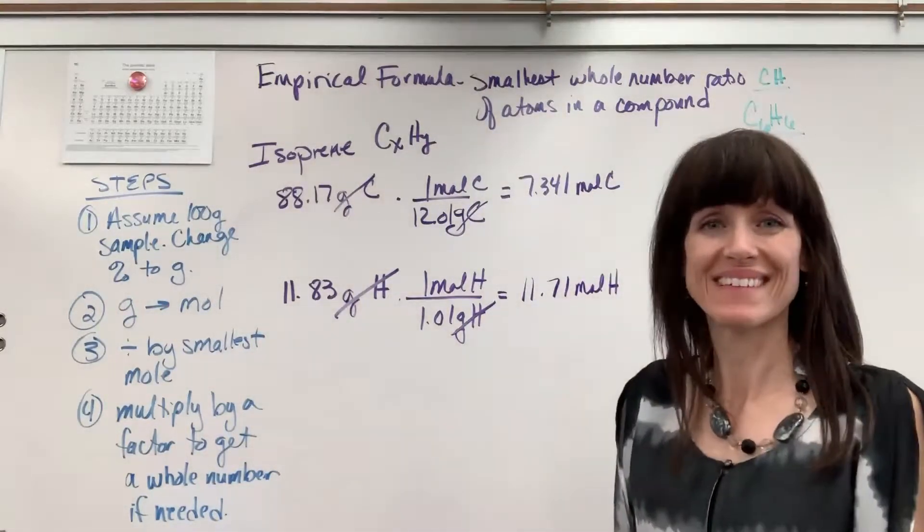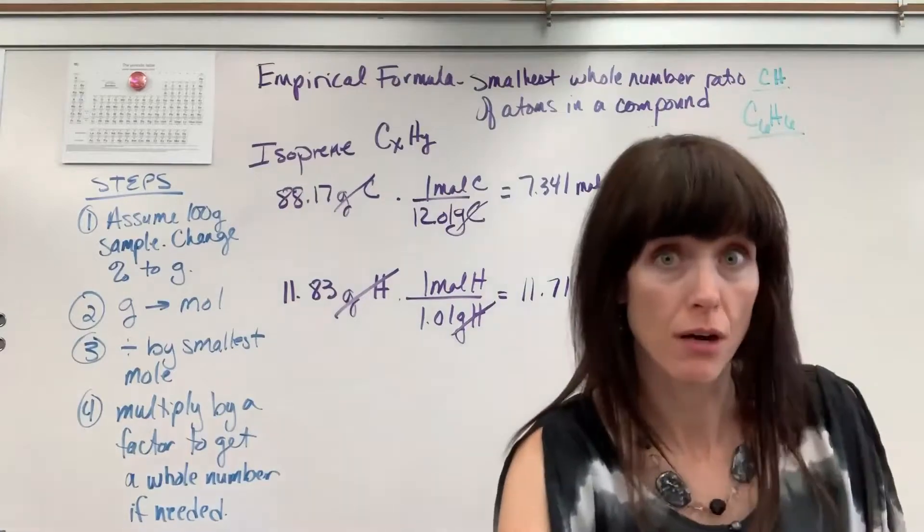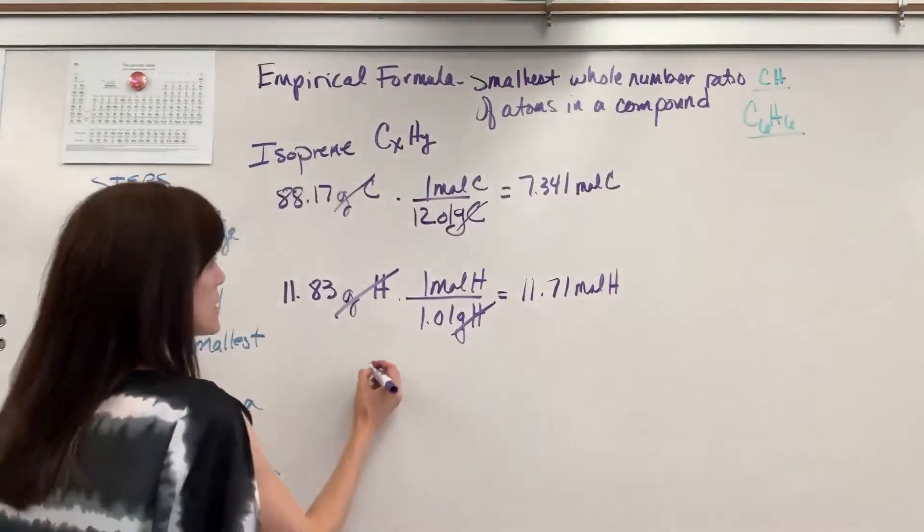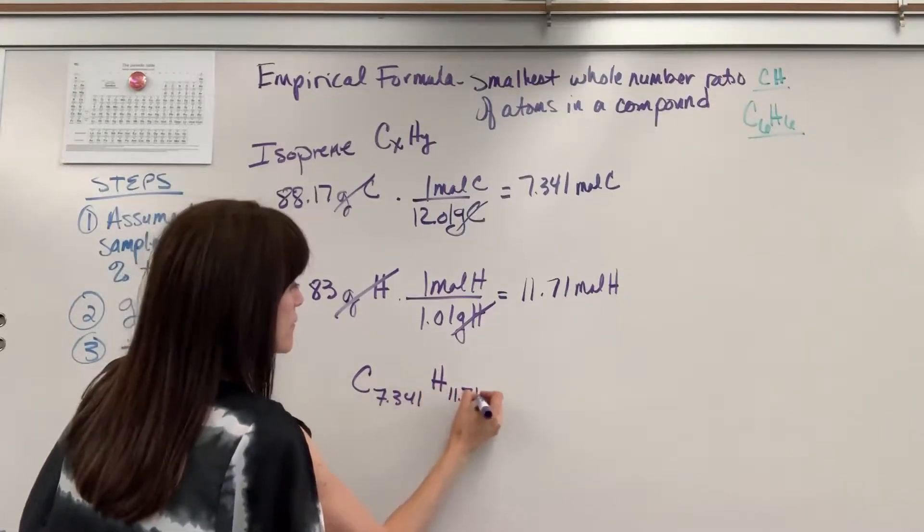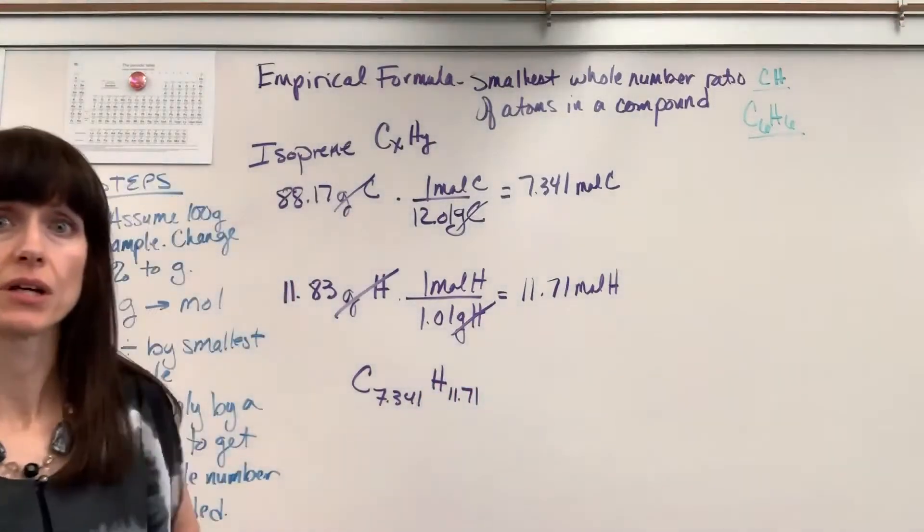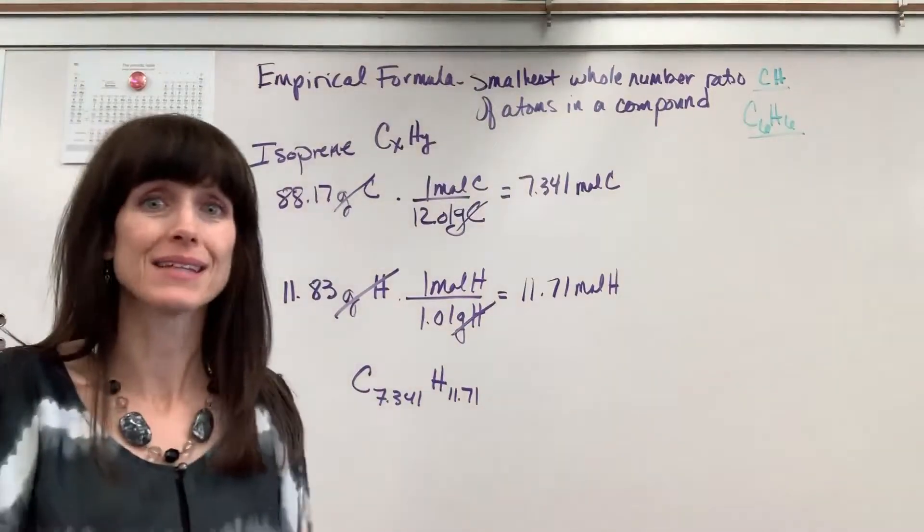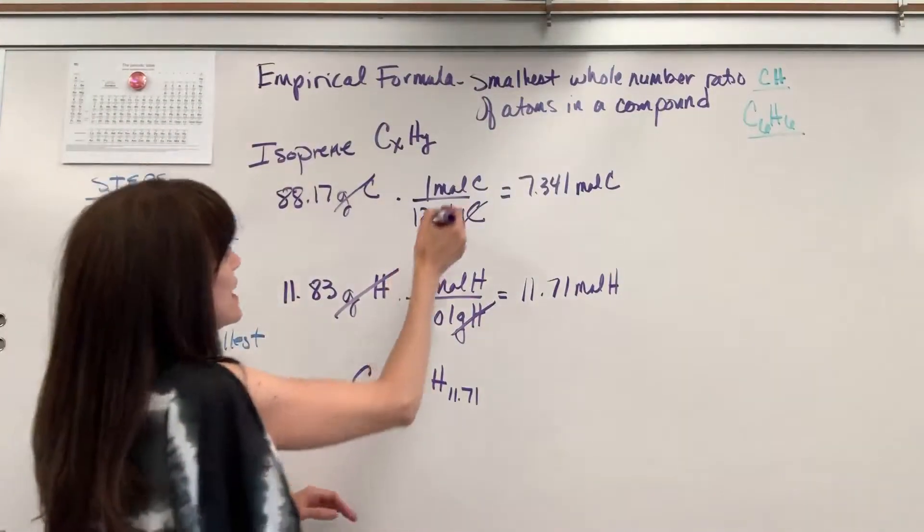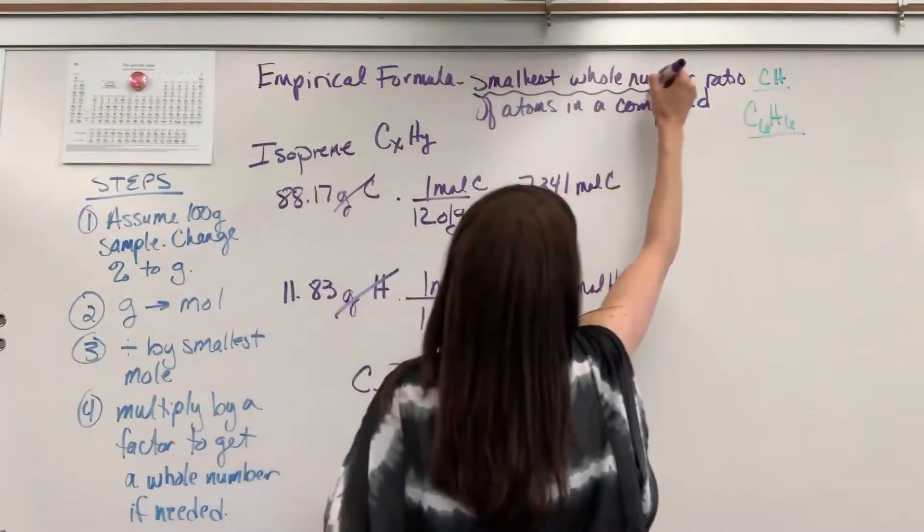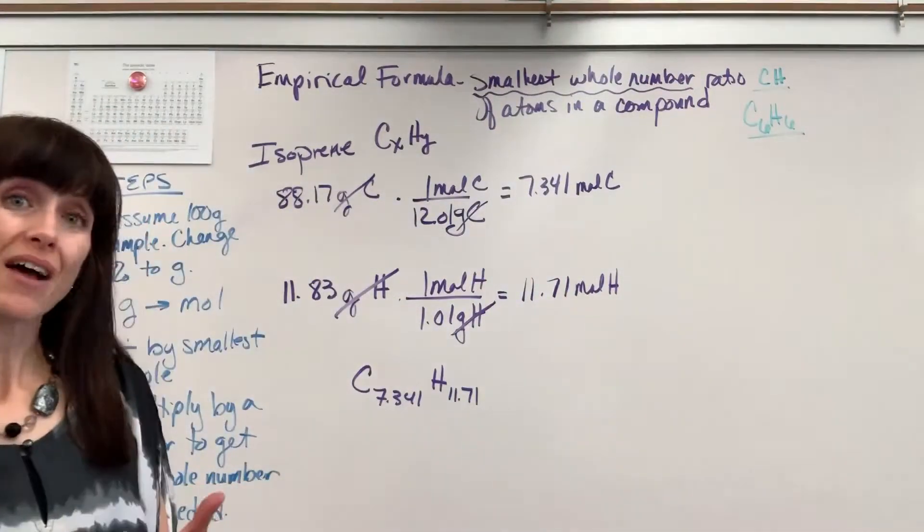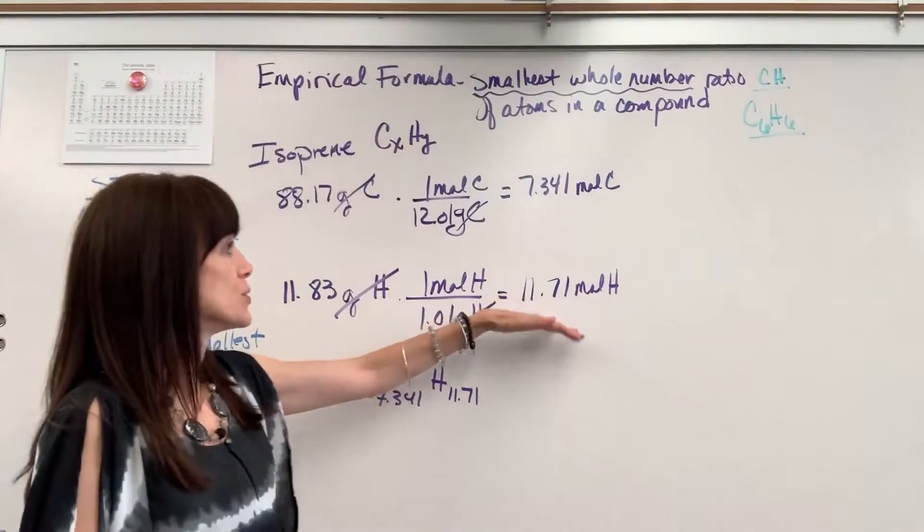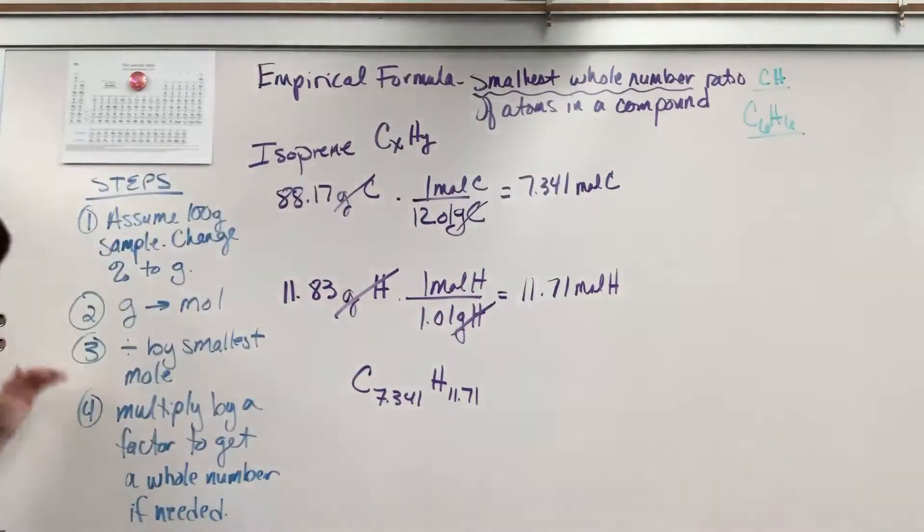Now what we just found is the molar ratio. So I could write it like this. C 7.341 hydrogen 11.71. That's the molar ratio. But it's ugly. It's a total mess. And notice we need smallest whole number. We need whole numbers. So there's a math trick. A math trick to get this ratio to whole numbers. Here it is.